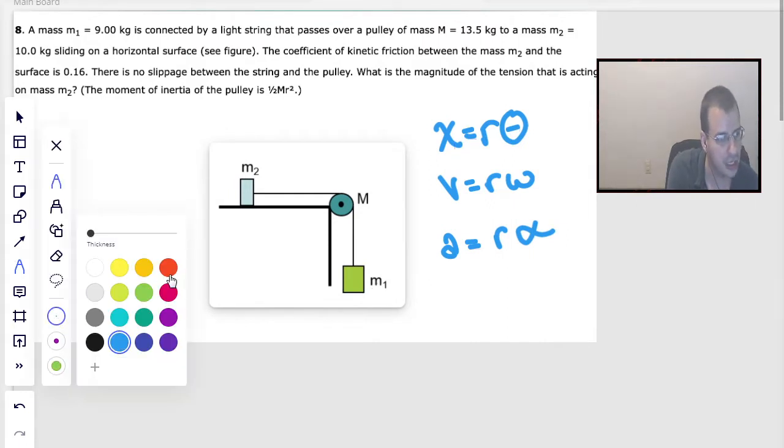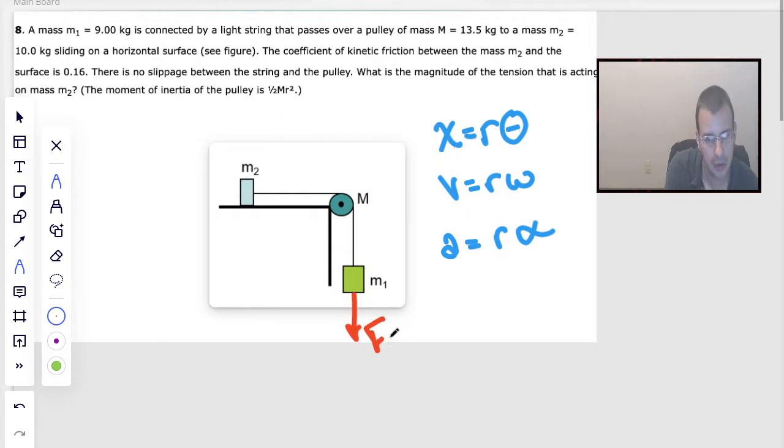We're going to draw some free body diagrams real quick. I'm going to call this force gravity 1 because it's from mass 1. I'm going to call this tension 1 coming down, tension 1. To the left is going to be tension 2. Pulling the block this way is going to be tension 2.